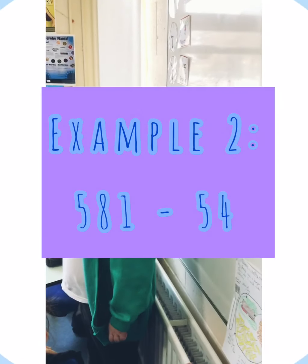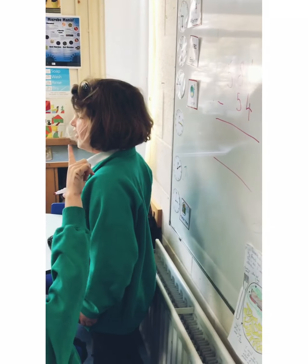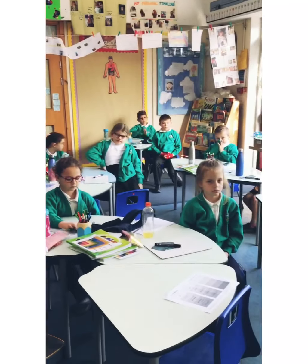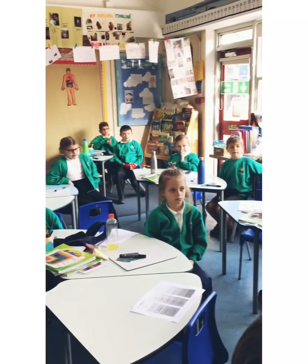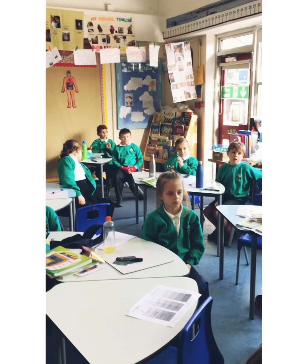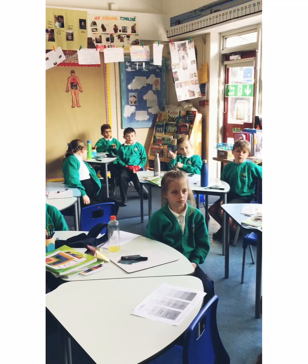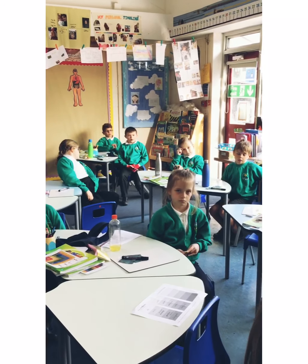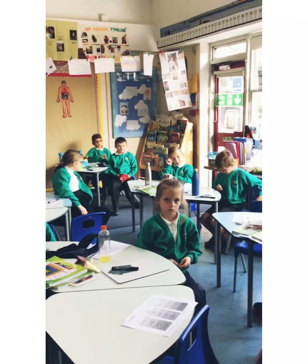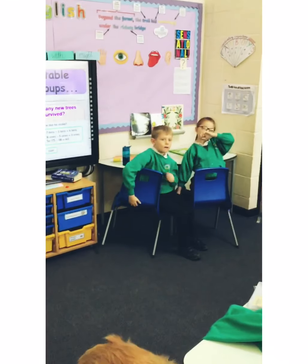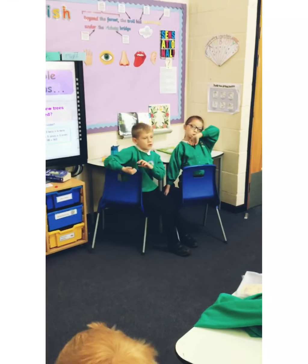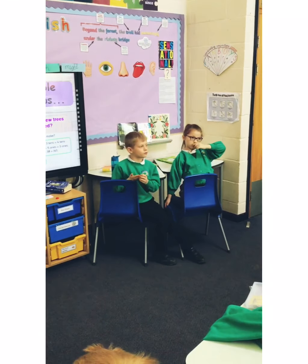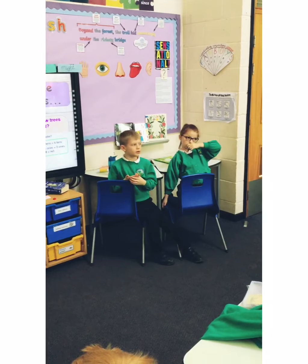Who knows what we do first? Jonathan? Go to the 1's column. And do what? You have to take away 4 from 4, but you can't do that. Elliot, why can't you do that? Because you only have 1, and there's 4, and you can't take away 4 from 1 — 4 is a bigger number.